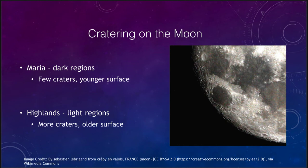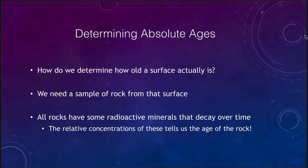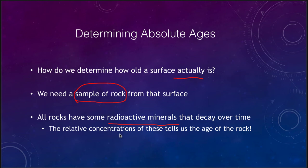If we want to determine absolute ages — actual ages — that requires a little bit more. We need a sample of rock from the surface. When rocks solidify, they all have some radioactive minerals that will decay over time, and we can look at the relative concentrations of these to determine how old that rock is. Once we can figure out how old the rock is, that helps us calibrate our crater counts to determine other ages. We don't have samples of the entire moon; we have samples from various regions that the Apollo astronauts explored, and we use the ages determined there to extrapolate and determine ages elsewhere on the moon.